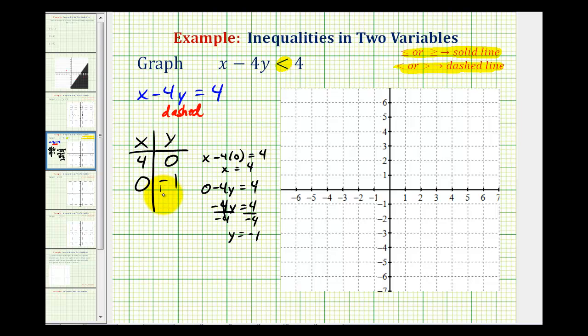And now we can plot these two points and sketch our borderline. But again remember it is going to be dashed. So the point four zero is here and the point zero negative one is here. So our line passes through these two points but is dashed.